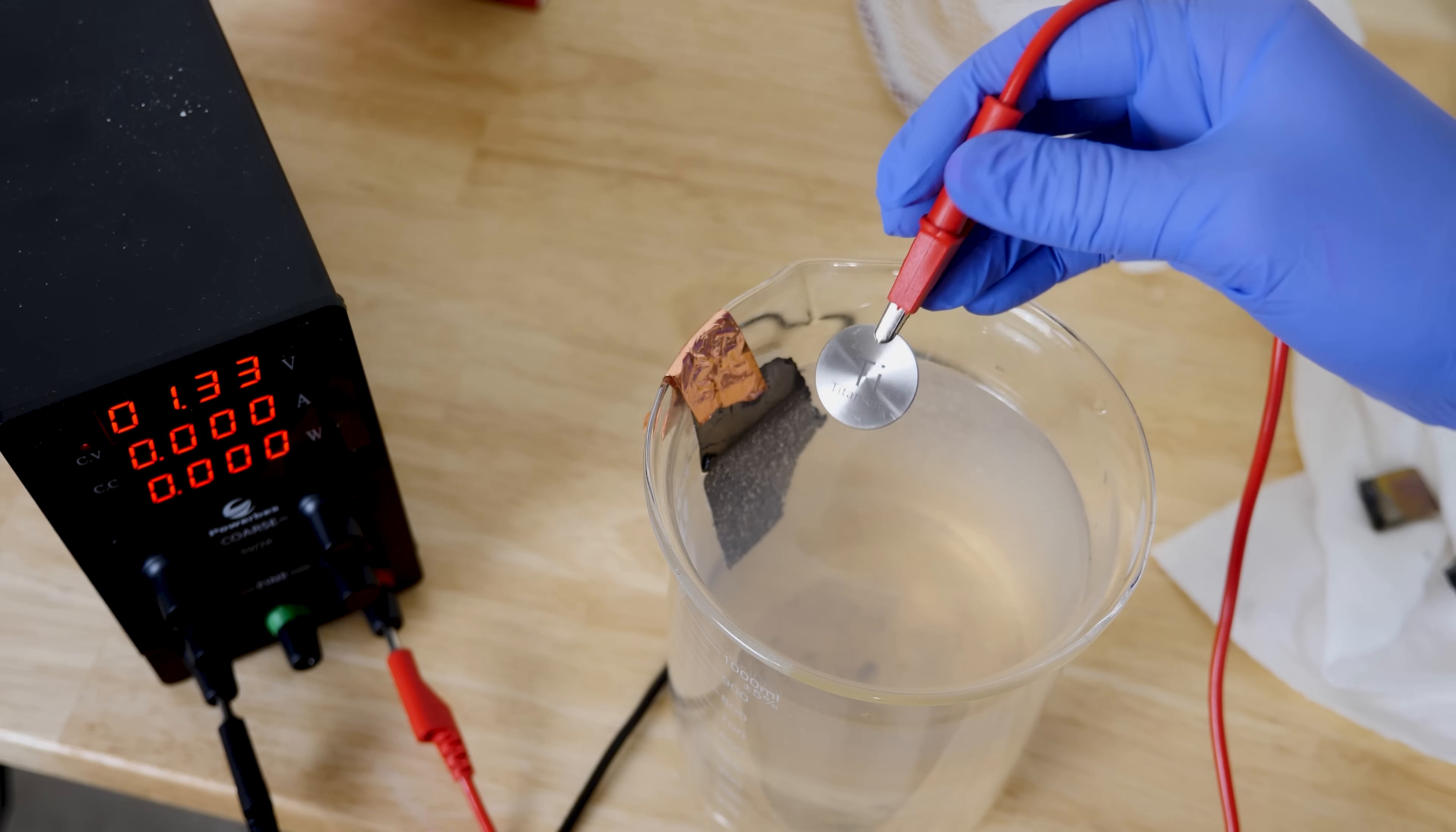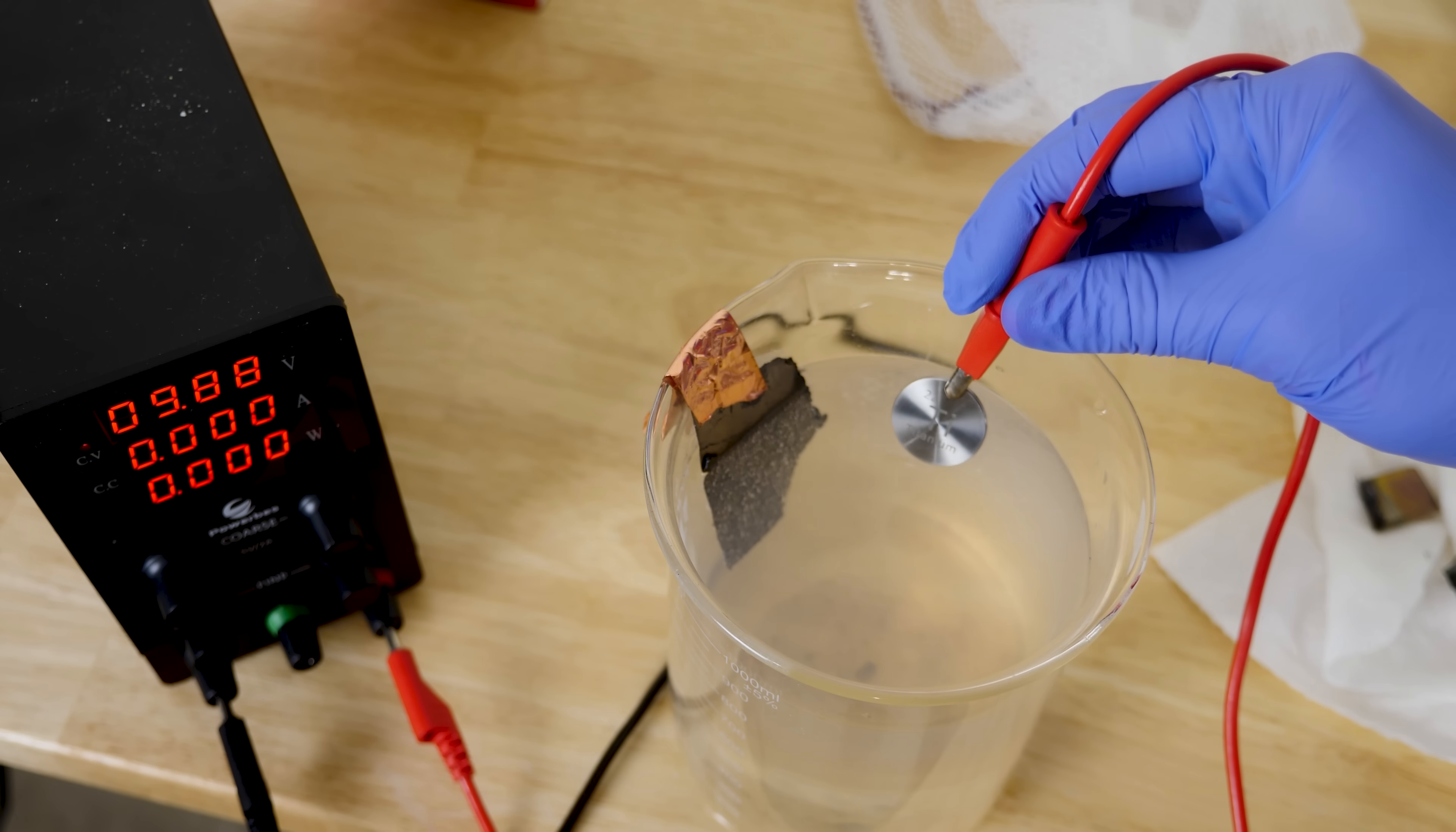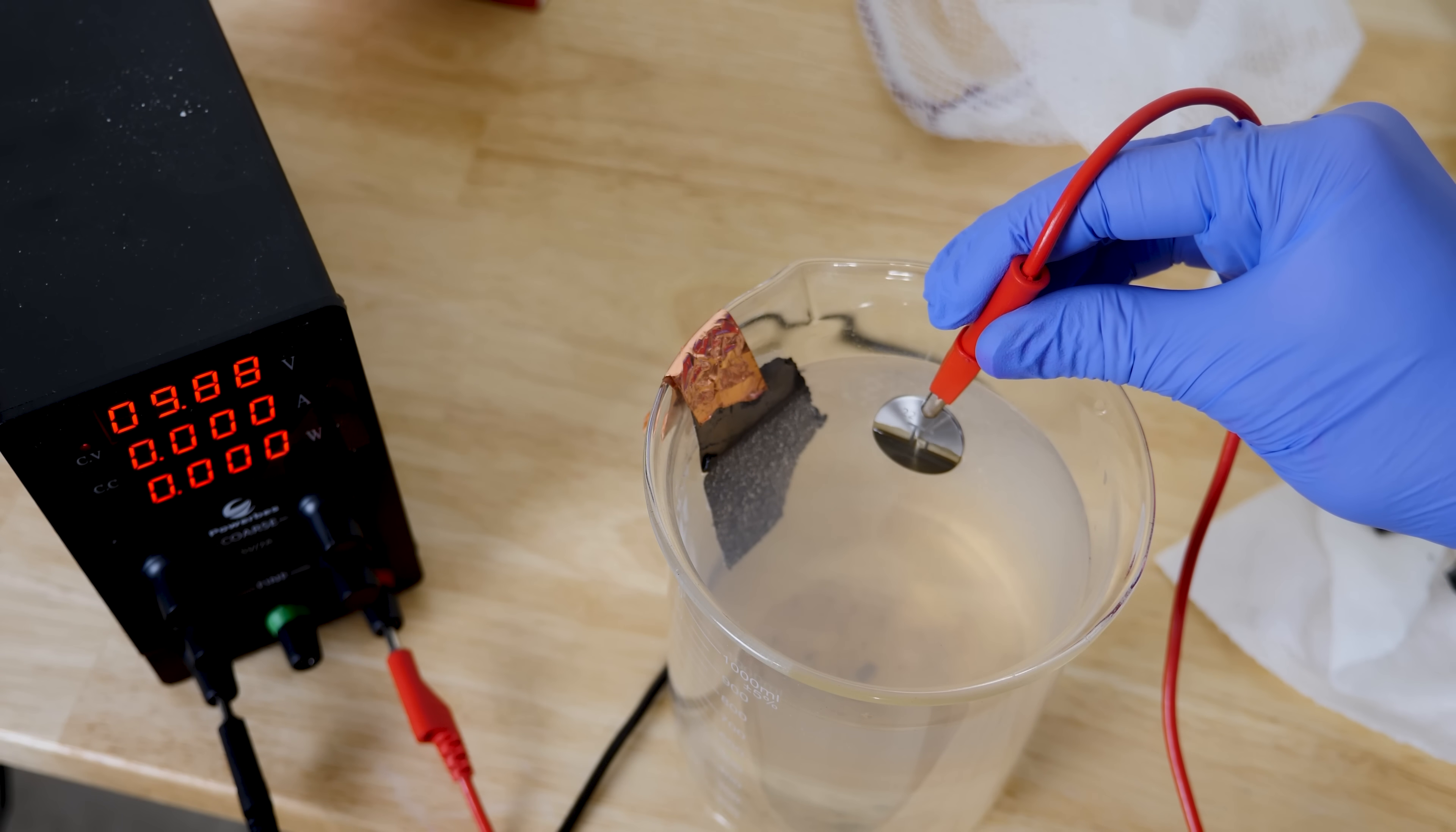Okay, so I have a little piece of titanium here. Let's start off at 10 volts. At 10 volts, we get this bronze color.